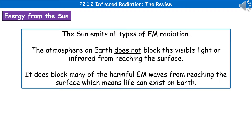If we consider the source of a lot of the electromagnetic radiation within our solar system, that would be the sun. The sun itself is going to emit all types of electromagnetic radiation, but we on Earth are not going to be exposed to all of them. The simple reason is that we have an atmosphere. The atmosphere on Earth does not block visible light or infrared, so we can see and be warm, but it will block a lot of the harmful electromagnetic waves, which means life can exist.